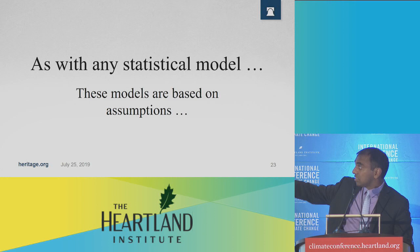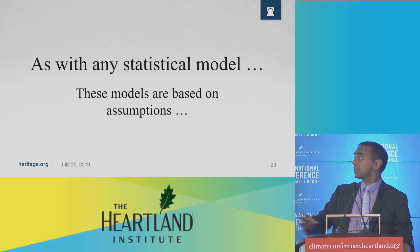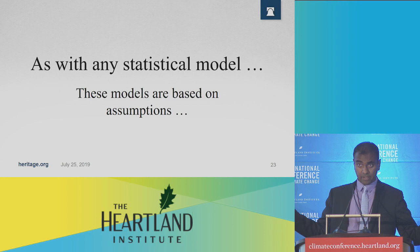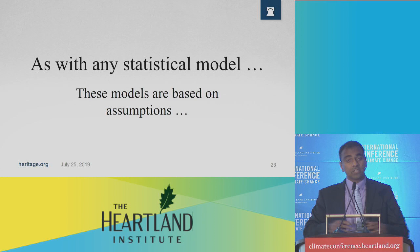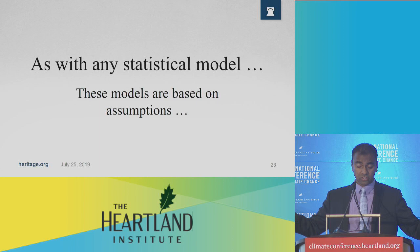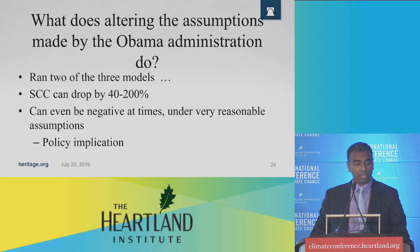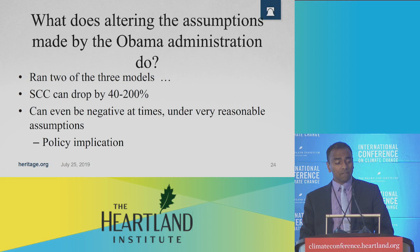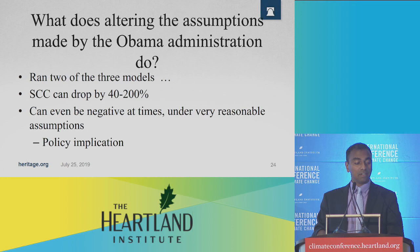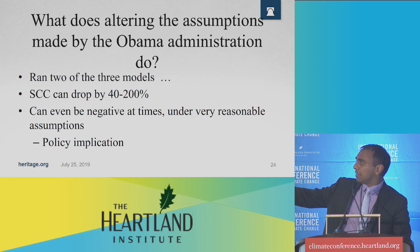As with any statistical model, these IAMs — beyond the fact that they don't properly account for benefits — are grounded on assumptions. A few of these assumptions we examined at the Heritage Foundation Center for Data Analysis, and I spoke about this in Congressional Testimony on Capitol Hill. They are based on the specification of a discount rate, the specification of a time horizon, and the specification of what we call an equilibrium climate sensitivity distribution. We ran two of these three models in-house at Heritage, and under very reasonable changes to these assumptions, the SCC can drop by between 40 and 200 percent. Under very reasonable assumptions, the FUN model, which actually takes into account benefits, can be negative — meaning that CO2 is a net positive externality. The policy implication is that one shouldn't be taxing CO2 emissions, but should be subsidizing it instead.